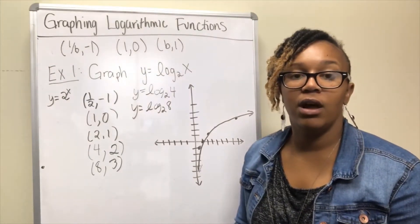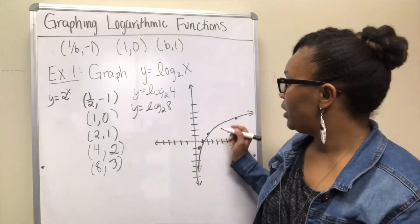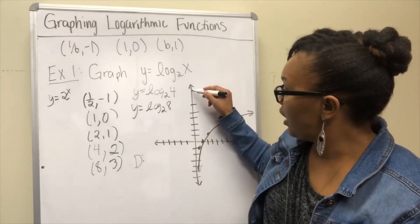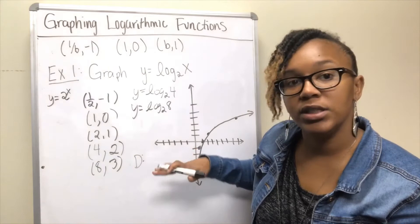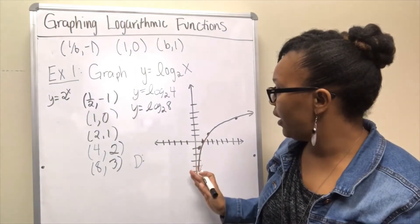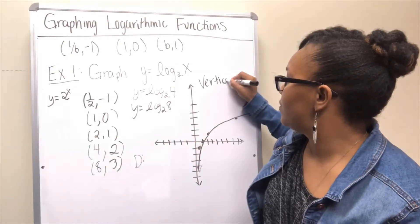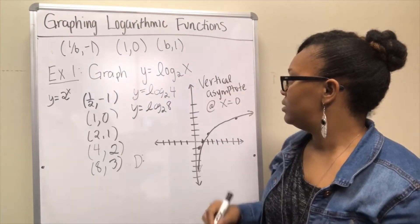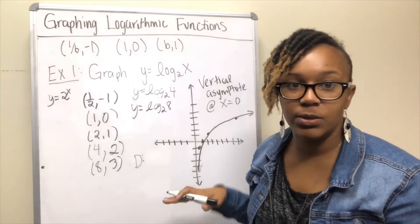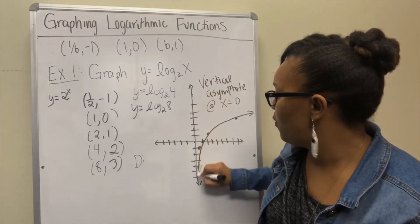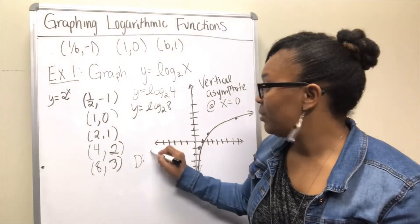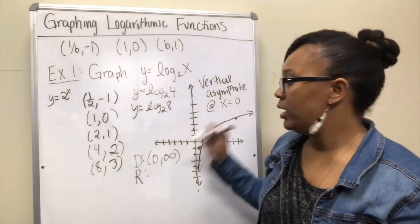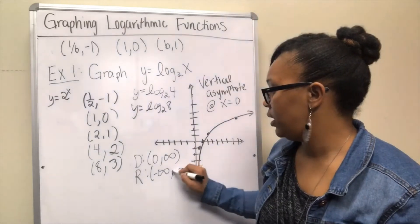That gives us the sketch of y = log₂(x). For this function we have a vertical asymptote at x = 0 — the graph gets very close to the y-axis but never touches it. The domain is (0, ∞) and the range is (-∞, ∞).